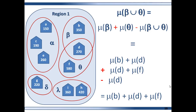You then get the proper measure, which is the sum of the measures for Hospital B, Hospital D, and Hospital F. Now say you had a set Gamma containing Hospital C, E, D, and F. If you took the union of sets Beta, Theta, and Gamma, you would have to subtract out Hospital D two times and subtract out Hospital F one time.